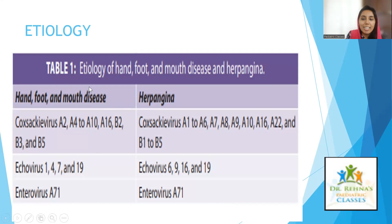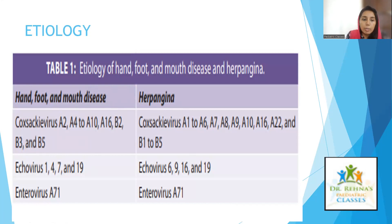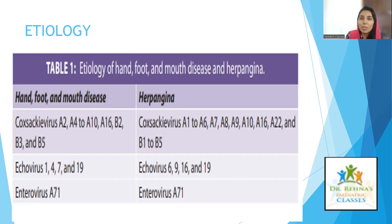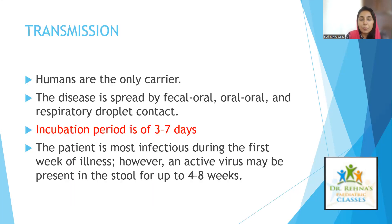Coming to the difference in etiology: hand foot mouth disease is caused by coxsackievirus A2, A4 to A10, A16, B2, B3, and B5. Herpangina is caused by coxsackievirus A1 to A6, A7, A8, A9, A10. For those preparing for PG exams, please note: enterovirus A71 can cause both hand foot mouth disease and herpangina, as can echo virus, with slight differences in strain. So coxsackievirus, enterovirus, and echo virus can all cause both conditions.